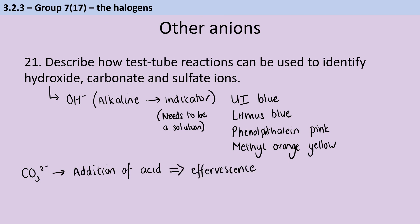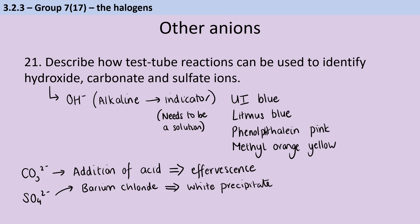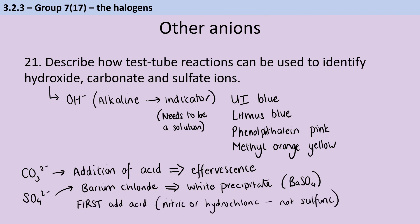For sulfate ions, we test by adding barium chloride, which gives a white precipitate of barium sulfate — the same substance used in a barium meal, as covered in the group 2 topic. Crucially, before adding barium chloride, you need to add some acid to remove any carbonates that would give a false positive. We tend to add nitric acid or hydrochloric acid. You obviously can't add sulfuric acid, as you'd be adding sulfate ions yourself and would then get a false positive.